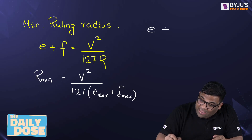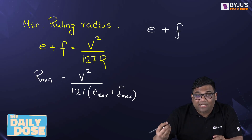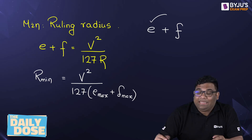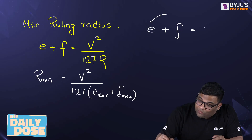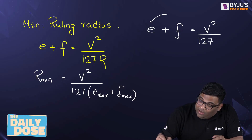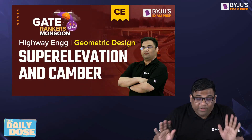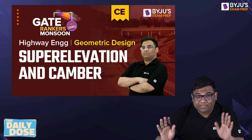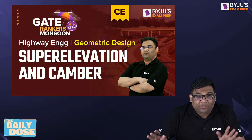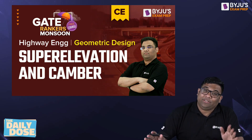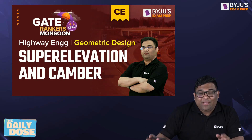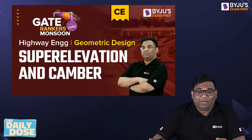Sometimes they will give you F and tell you that when F is completely mobilized, find out E — in that case also use the equation E plus F equals V square by 127R. If you want to solve more questions, there is a full video on super elevation and camber available on YouTube. Thank you very much, see you in the next video.